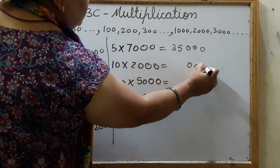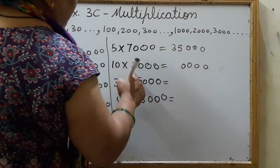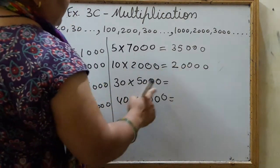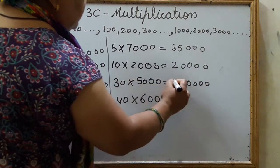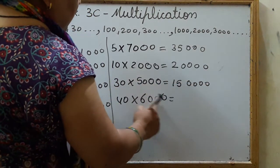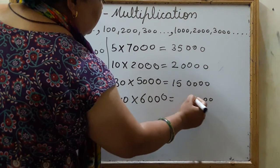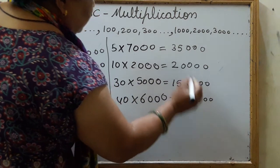3 zeros and 5 7s are 35. 3 zeros, 4 zeros actually and 2 1s are 2. Now, 4 zeros and 3 5s are 15. Again, 4 zeros and 4 6s are 24.